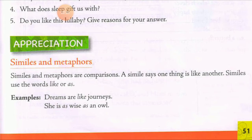A simile says one thing is like another. Simile kehta hai ki ek cheez doosri ki tarah hai, uske jaisi hai. Similes use the words 'like' or 'as'. Examples: 'Dreams are like journeys' — this line we have studied in the poem also. Yahaan kaha ja raha hai ki sapne bhi safar ki tarah hootay hain — safar jaisa hootay hain, safar hi nahi hootay. Dono ke beech mein comparison kiya ja raha hai.